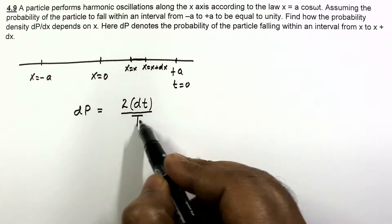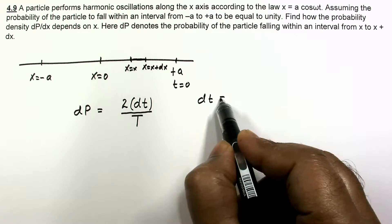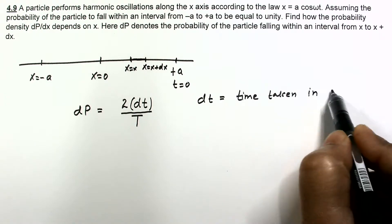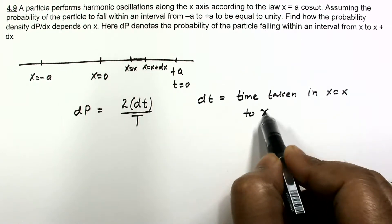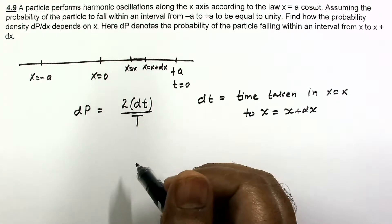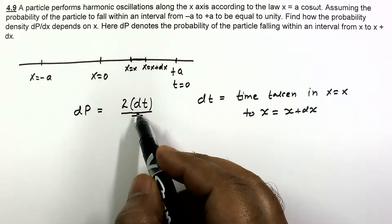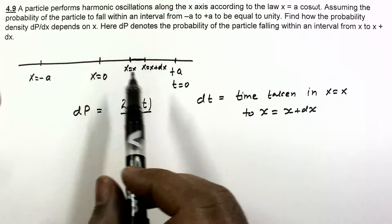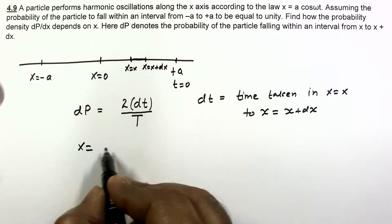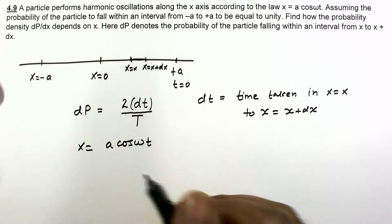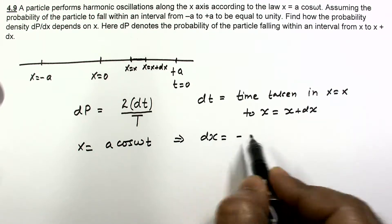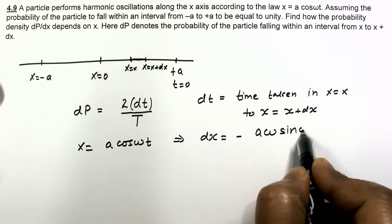So dp is equal to 2dt divided by T, where dt is the time taken to cross from x to x plus dx, and T is the time period of the SHM. Now we have to replace dt by dx since we are required to find dp/dx. The equation is x equals a cos(ωt), and on differentiating: dx equals minus a·ω·sin(ωt)·dt.